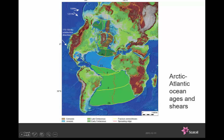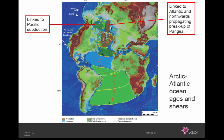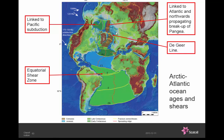This basically shows a gradual propagation northwards of the Atlantic Ocean — Jurassic in blue, early Cretaceous in dark green, late Cretaceous in light green, Tertiary in brown — and the Arctic Ocean is this little piece up here. You can view the Arctic as firstly an earlier part linked to Pacific subduction, then a later part linked to the northwards-propagating Atlantic. And coming back to those shear margins — the De Gea Line sits right here, and the equatorial shear zone is another very well-known one. Both show a range of phenomena typical of shear margins and could bear more comparative research.